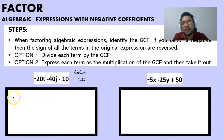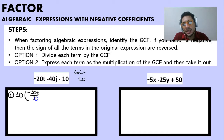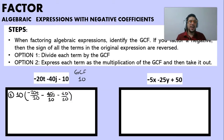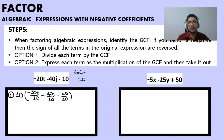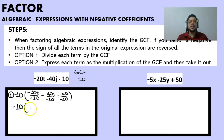With the GCF being 10, using option 1 we can write 10 multiplied by (minus 20T divided by 10, minus 40J divided by 10, and minus 10 divided by 10). However, it is smarter to use minus 10 as the factor, since all terms of the trinomial are negative. Factoring negative 10 means we divide each term by negative 10.